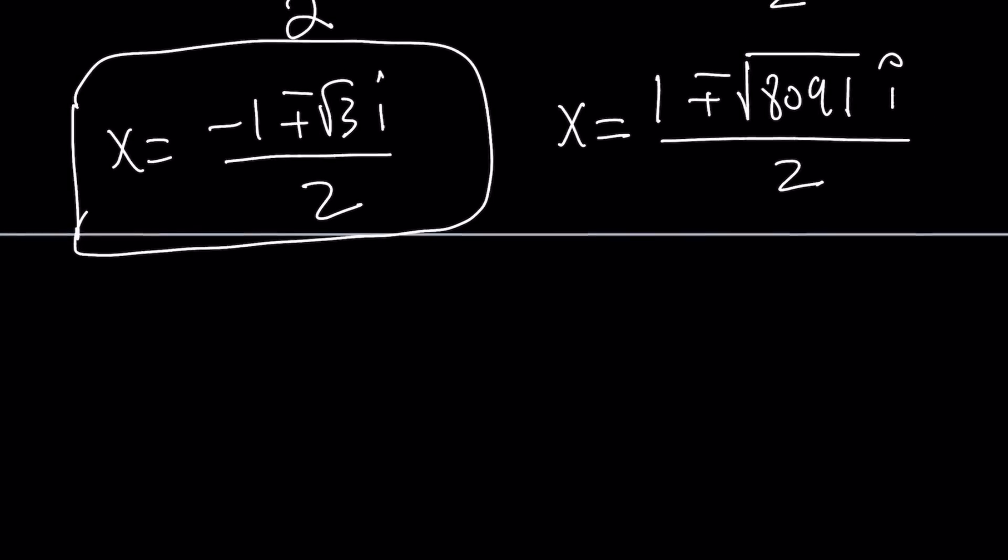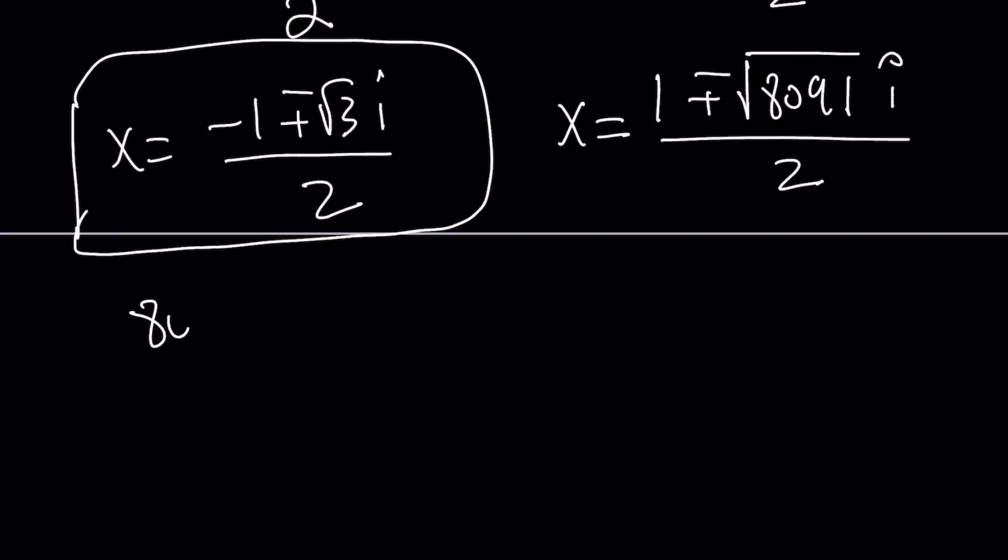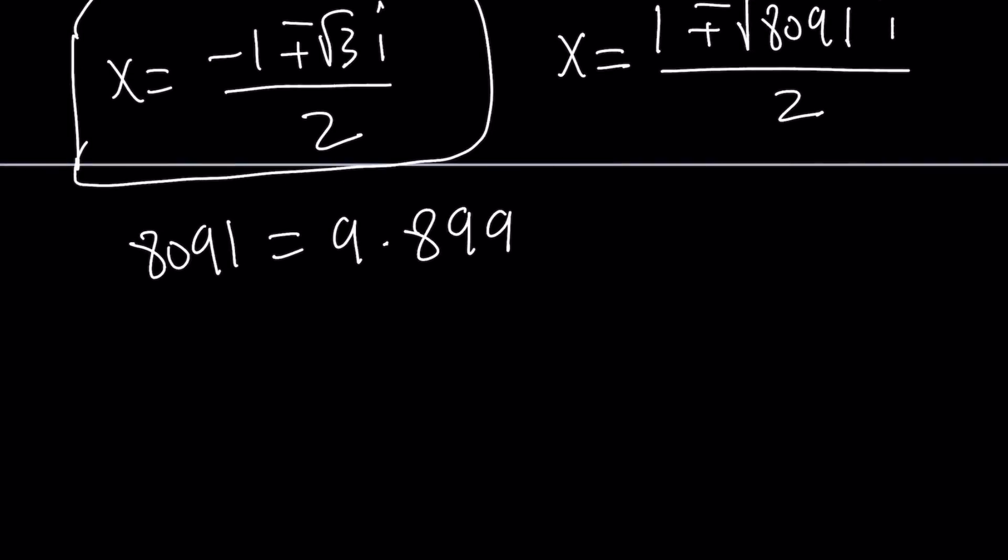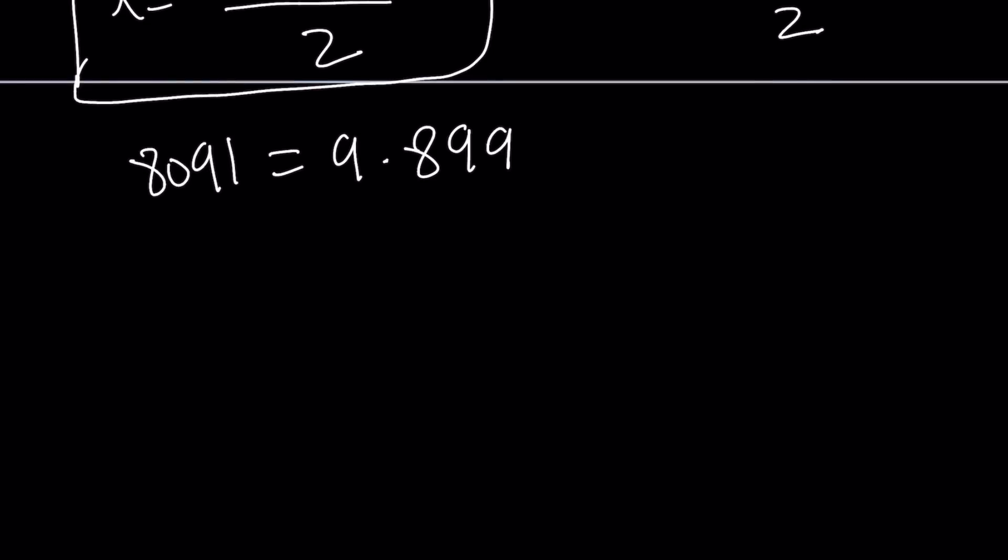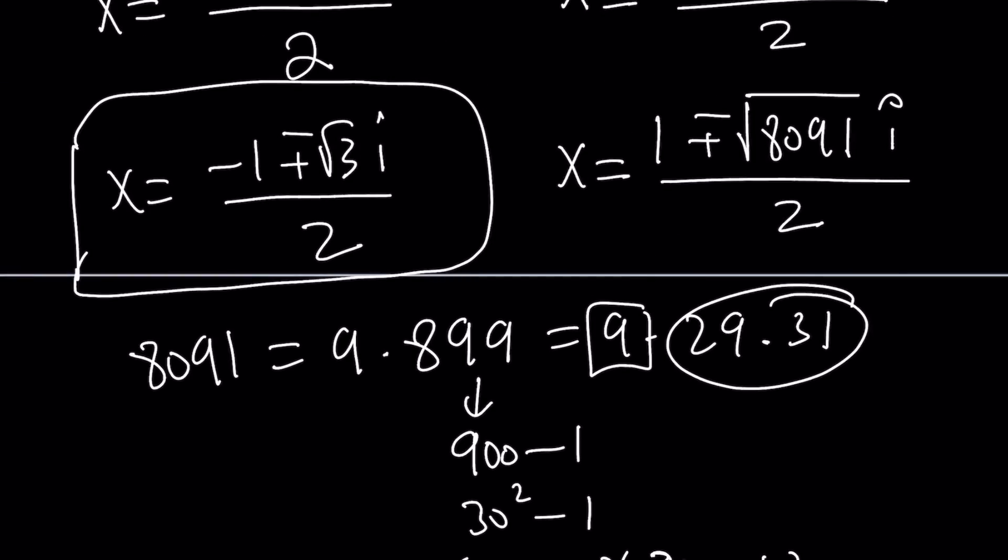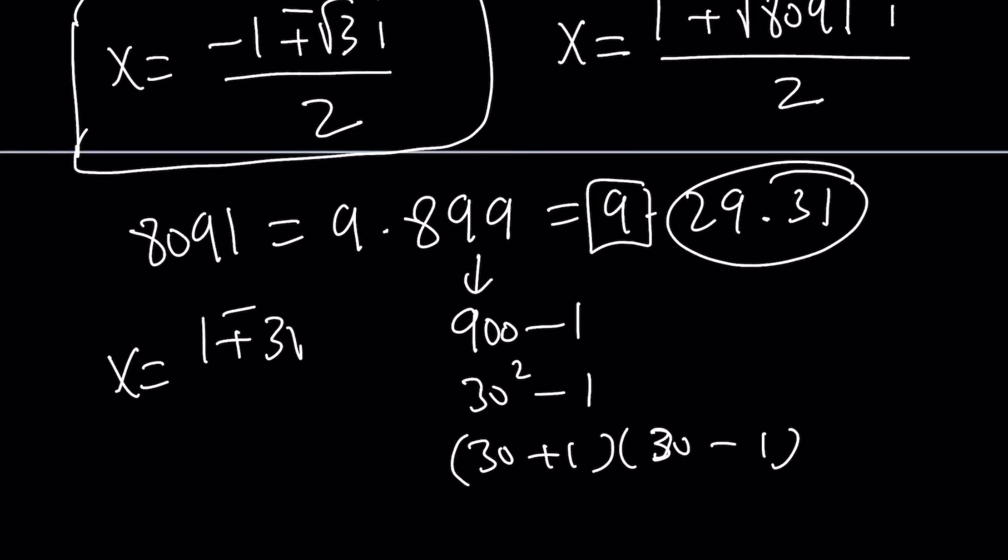This is not simplified yet because this is divisible by 9, which is nice because 9 is a perfect square. 8091 is actually 9 times 899. Kind of hard to believe, right? Maybe you should believe that because this is 9 less than 8100. 899 can also be factored into 31 times 29. You know how I know that? You can write this as 900 minus 1, which is 30 squared minus 1. That's 30 plus 1, 30 minus 1. So factoring actually helps a lot with prime factorization. This can be written as 9 times 29 times 31. But this doesn't help because 9 is the only perfect square. So now we take it out as 1 plus minus 3 times the square root of 899i over 2.